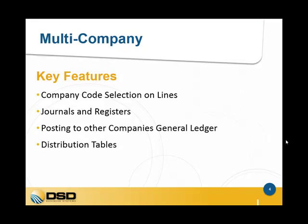Some of the key features of our multi-company products include having the company code selection on the lines tabs during data entry. The company code exists to the left of the GL account, so you can choose a company code which will then switch to that company's chart of accounts so that you can select their GL account. The journals and registers are also enhanced to show the company code as well as a breakdown of the due to and due from accounts on the posting recap. The posting to the general ledger will handle automatically the posting to the other company all during the update.